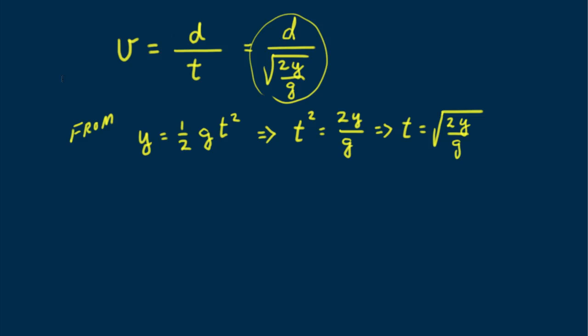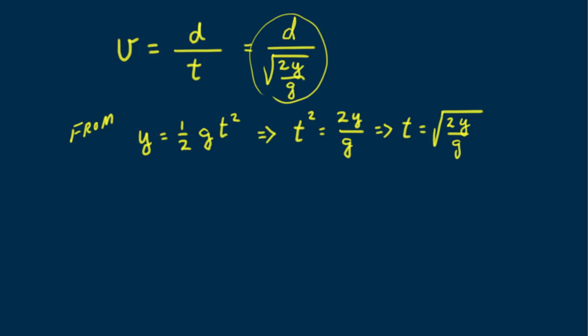Let's put some numerical values in and ask Part B. Calculate the ball's maximum speed as it clears the net of height 1.00 meters and that strikes within the court's border a distance of 12.0 meters from the base of the net.